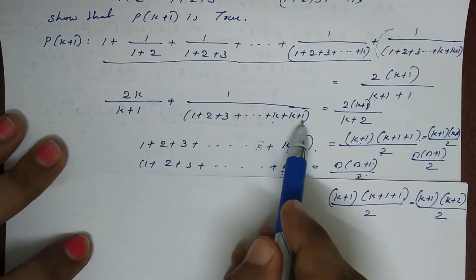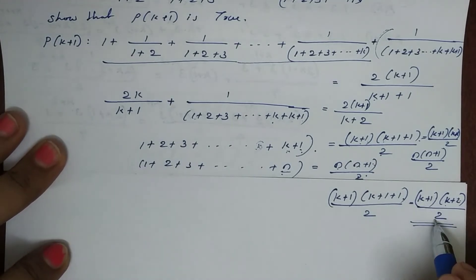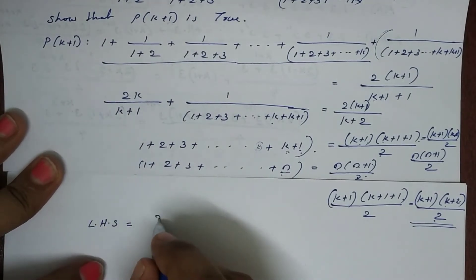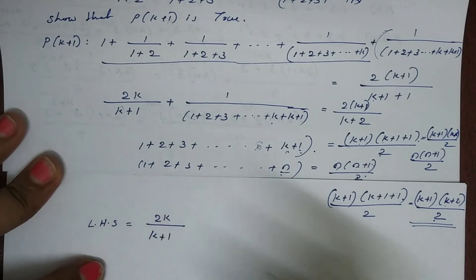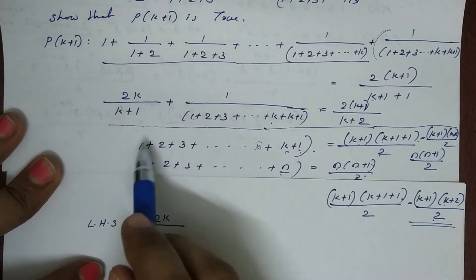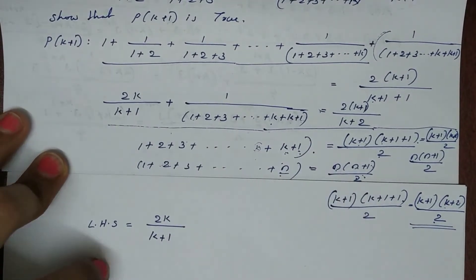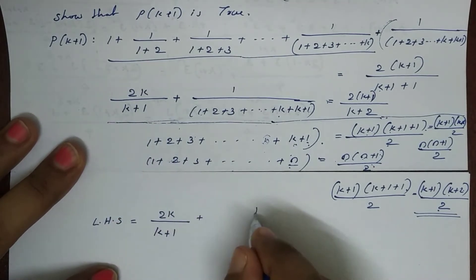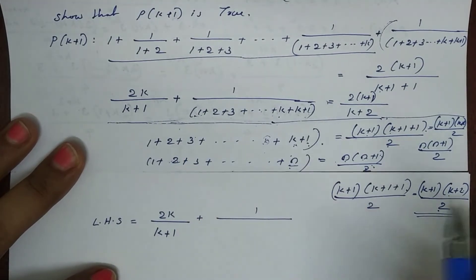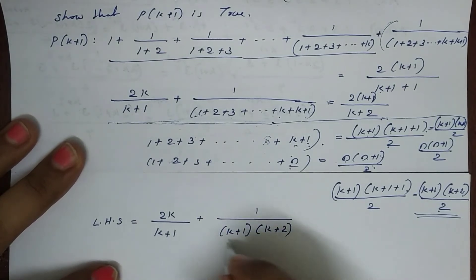So 1 plus 2 plus 3 plus etc. plus k plus (k+1) equals (k+1)(k+2)/2. We substitute this into the LHS. The LHS becomes 2k divided by (k+1) plus 1 divided by [(k+1)(k+2)/2], which equals 2k/(k+1) plus 2/[(k+1)(k+2)].